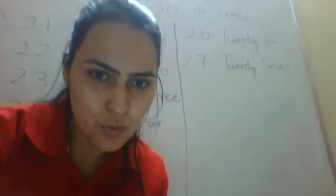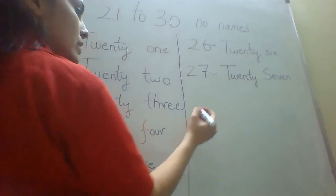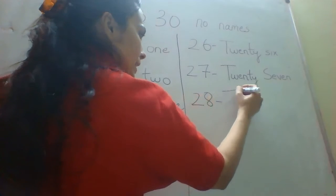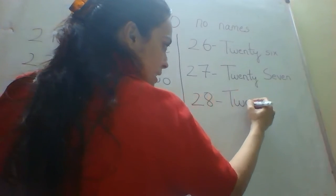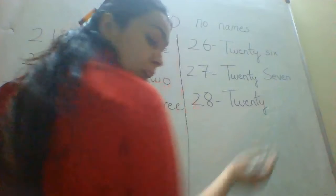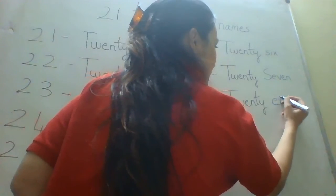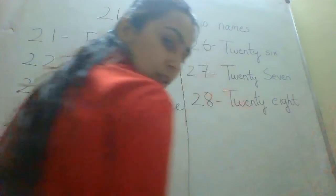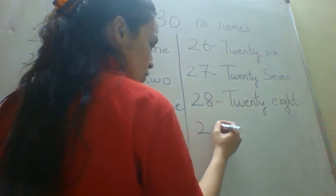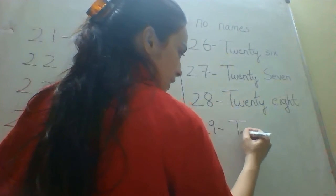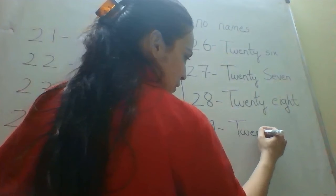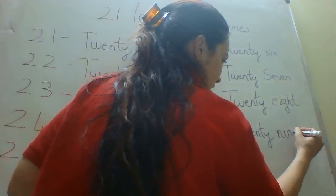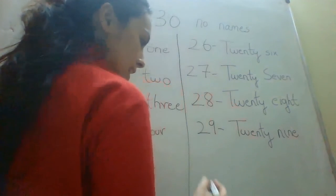Then we have 28: T-W-E-N-T-Y, and the spelling of 8 is E-I-G-H-T. Then we have 29: T-W-E-N-T-Y, and the spelling of 9 is N-I-N-E.